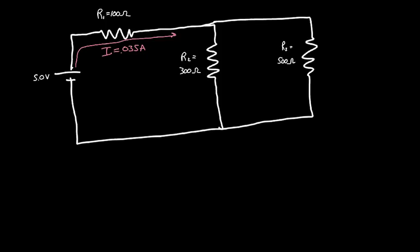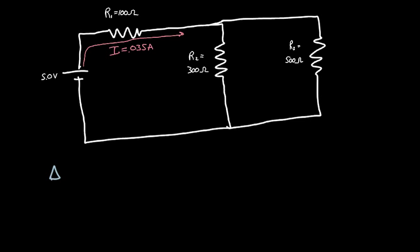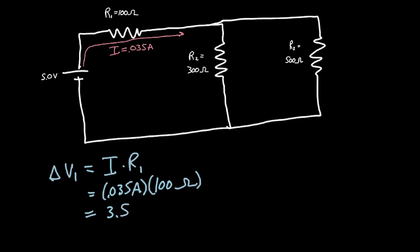Now this is great because we know everything for R1 except for the voltage drop across R1. We know the resistance and we know the current. And so for Ohm's law there's only three variables in that equation. We can solve for the voltage drop across R1. So delta V1 then is going to be equal to just I times R1, which is 0.035 amps times 100 ohms, which gives us 3.5 volts.